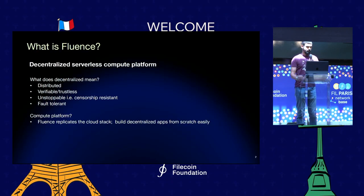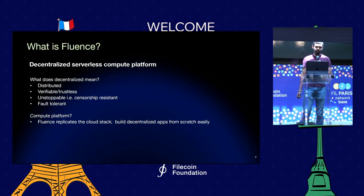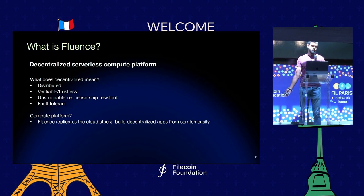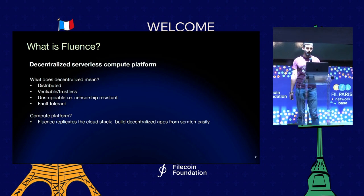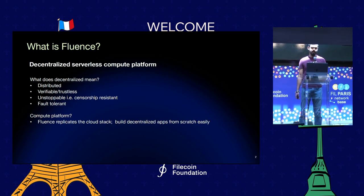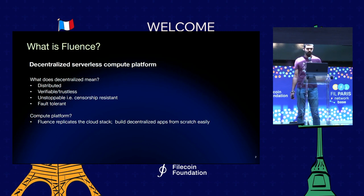Fluence is a decentralized serverless compute platform, and we can question actually every word here. What does decentralized mean? At least it means distributed and in some sense trustless, so you need to reason about the trust. It should be unstoppable, censorship resistant, fault tolerant. That's probably the minimum.